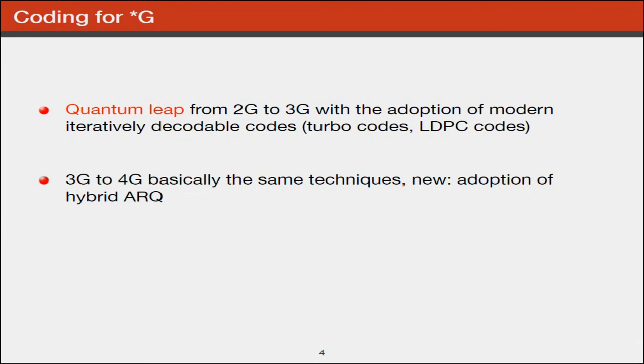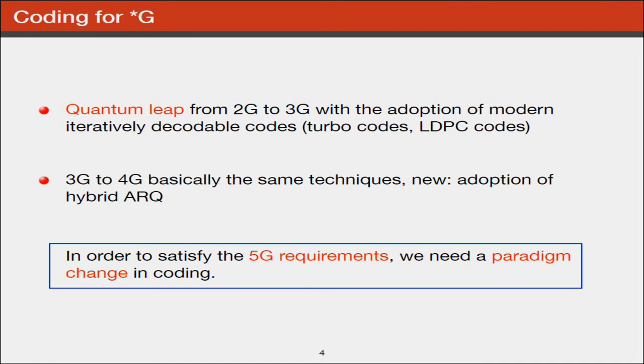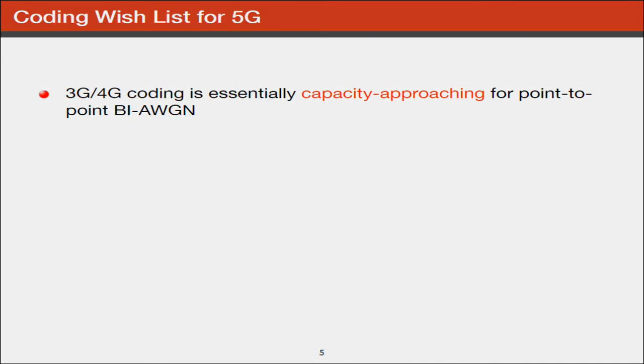What has happened in channel coding? There's a quantum leap from 2G to 3G with the adoption of modern decoded codes like turbo codes and LDPC codes. 2G uses Reed-Solomon codes, block codes people have used for 30 years. 3G to 4G is basically the same technique. What was new is the adoption of hybrid ARQ, which introduces feedback. The decoder tells the encoder to send more bits if it cannot decode due to channel noise. For 5G, to satisfy these stringent requirements, we need a paradigm change in coding.